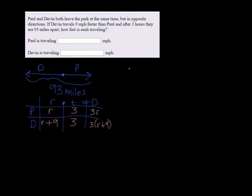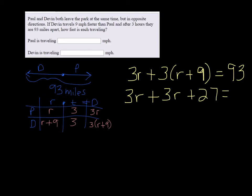We have 3R plus 3 times R plus 9 equals the total distance which was 93 miles. We need to distribute that 3 so we get 3R plus 3R plus 27 equals 93.